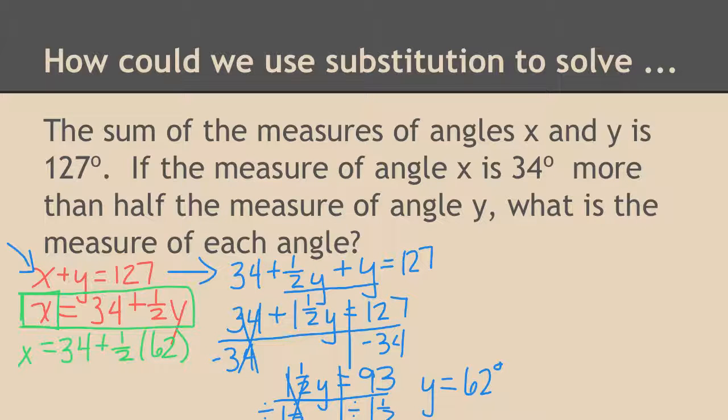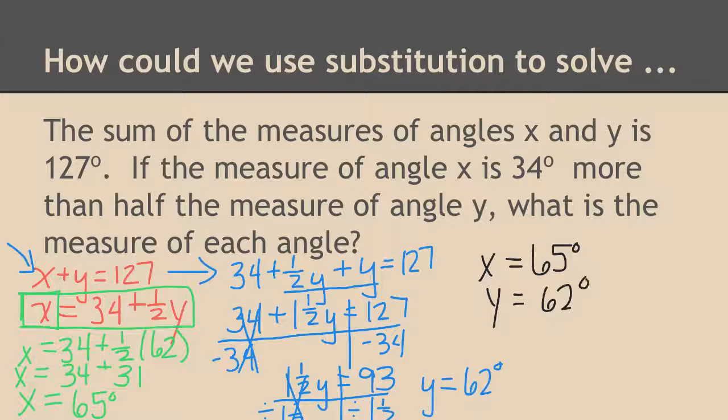So then I'm just going to calculate. Half of 62 is 31. So 34 and 31 together give me 65 degrees. So my x angle is 65 degrees and my y angle is 62 degrees and I have answered the question.